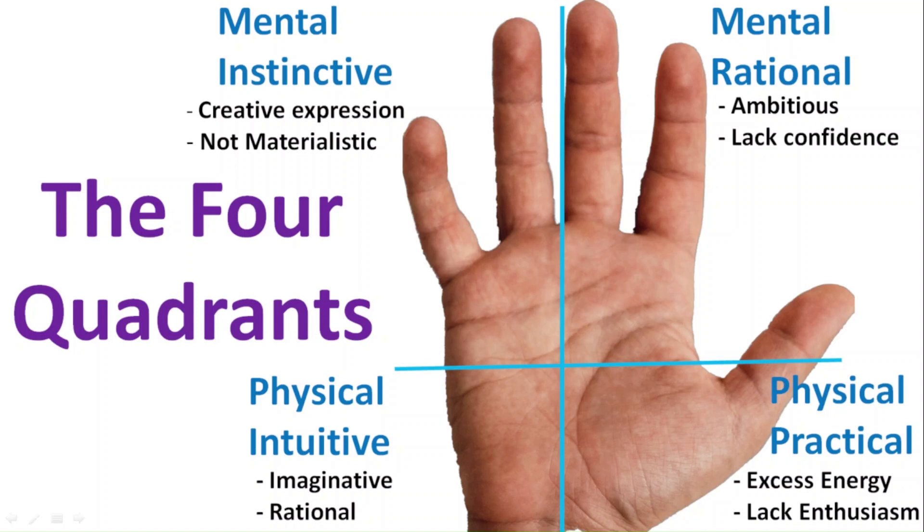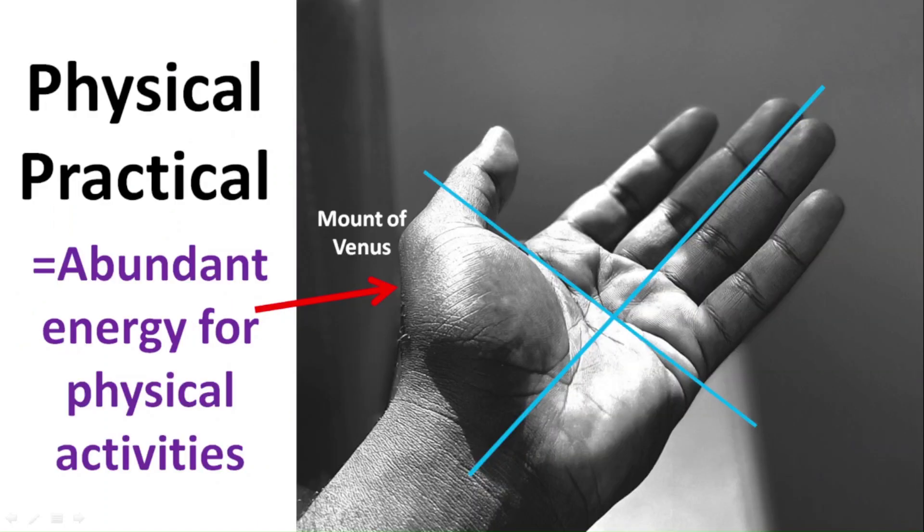If all quadrants look pretty balanced, like this hand, then you are a well-balanced person. Here's an example of a hand where the physical practical quadrant is the most developed, meaning this person has abundant energy for physical activities.